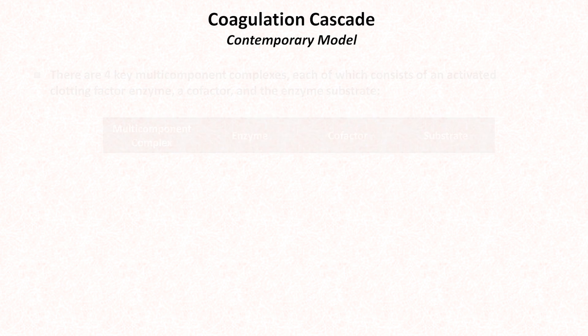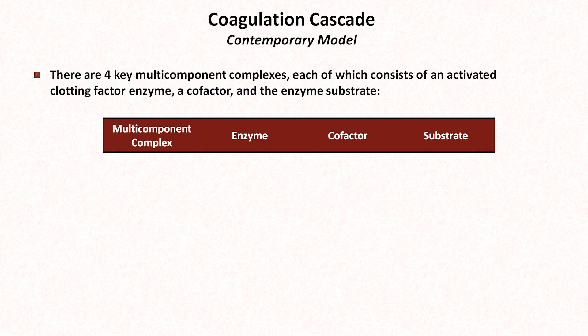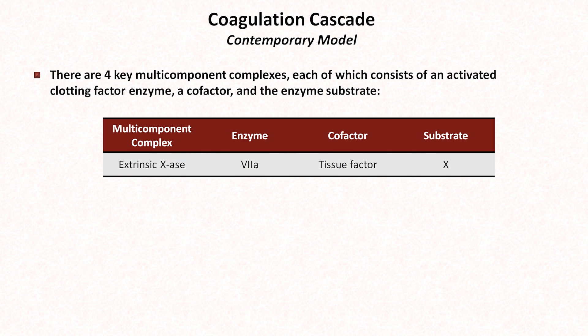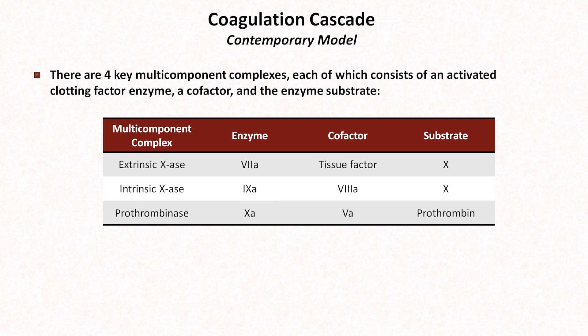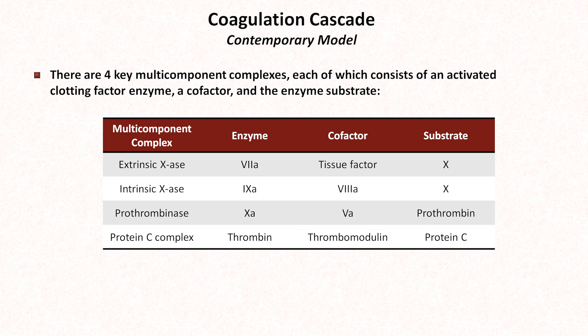In the contemporary model of the coagulation cascade, there are four key multi-component complexes, each of which consists of an activated clotting factor enzyme, a cofactor, and the enzyme substrate. The first is called the extrinsic factor 10ase, composed of activated factor 7, tissue factor, and inactivated factor 10. The intrinsic factor 10ase is composed of activated factor 9, activated factor 8, and inactivated factor 10. The prothrombinase complex is composed of activated factor 10, activated factor 5, and prothrombin. And last, the protein C complex is composed of thrombin, thrombomodulin, and inactivated protein C.